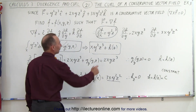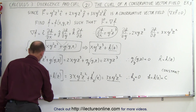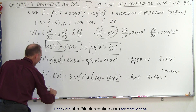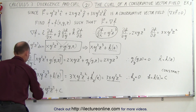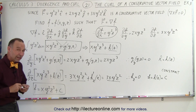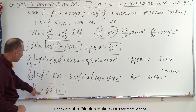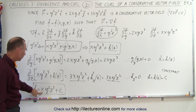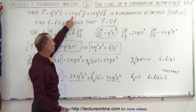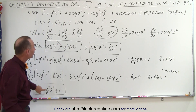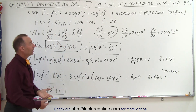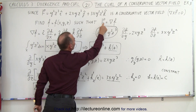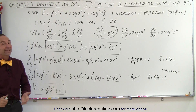Since h is just a constant, the function we're looking for is f equals xy²z³ plus a constant. To verify: if we take the partial with respect to x, we get y²z³; the partial with respect to y gives 2xyz³; and the partial with respect to z gives 3xy²z². So ultimately, we found the function such that when we take its gradient, we get our initial vector field back. And that's how it's done.